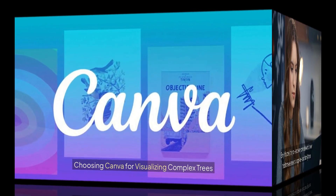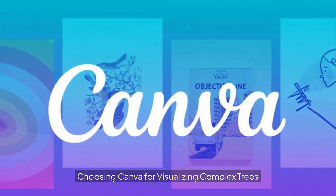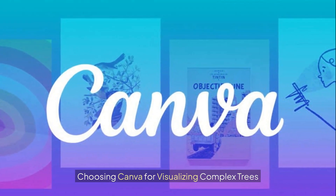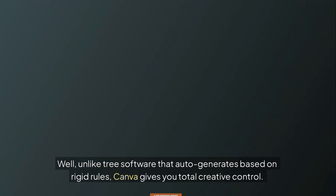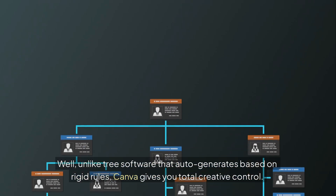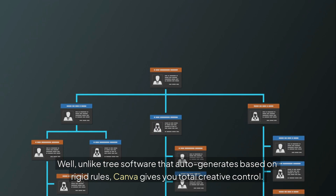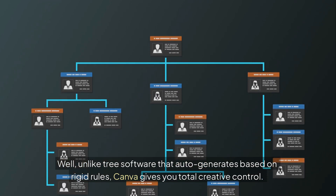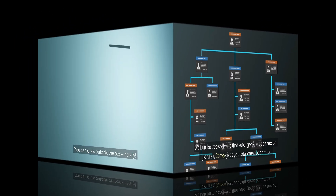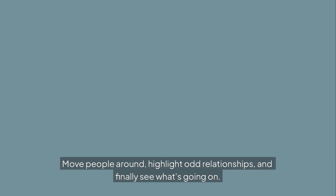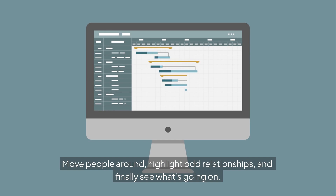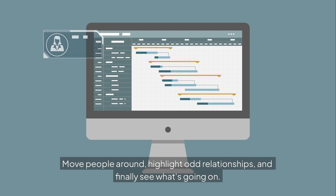Choosing Canva for visualizing complex trees. You might be thinking, why Canva? Well, unlike tree software that auto-generates based on rigid rules, Canva gives you total creative control. You can draw outside the box — literally. Move people around, highlight odd relationships, and finally see what's going on.